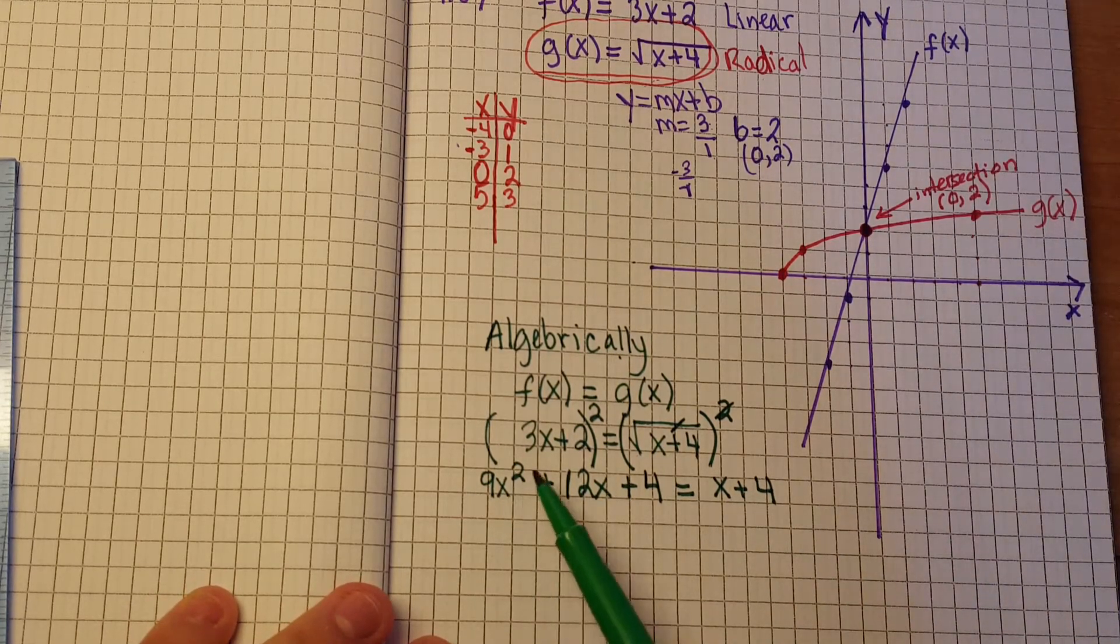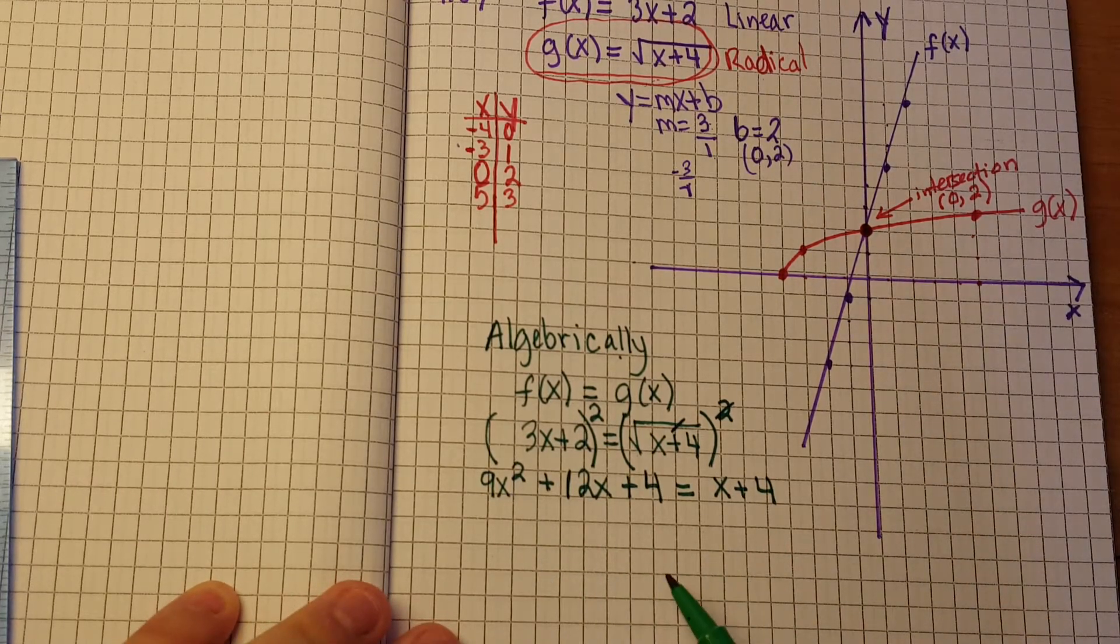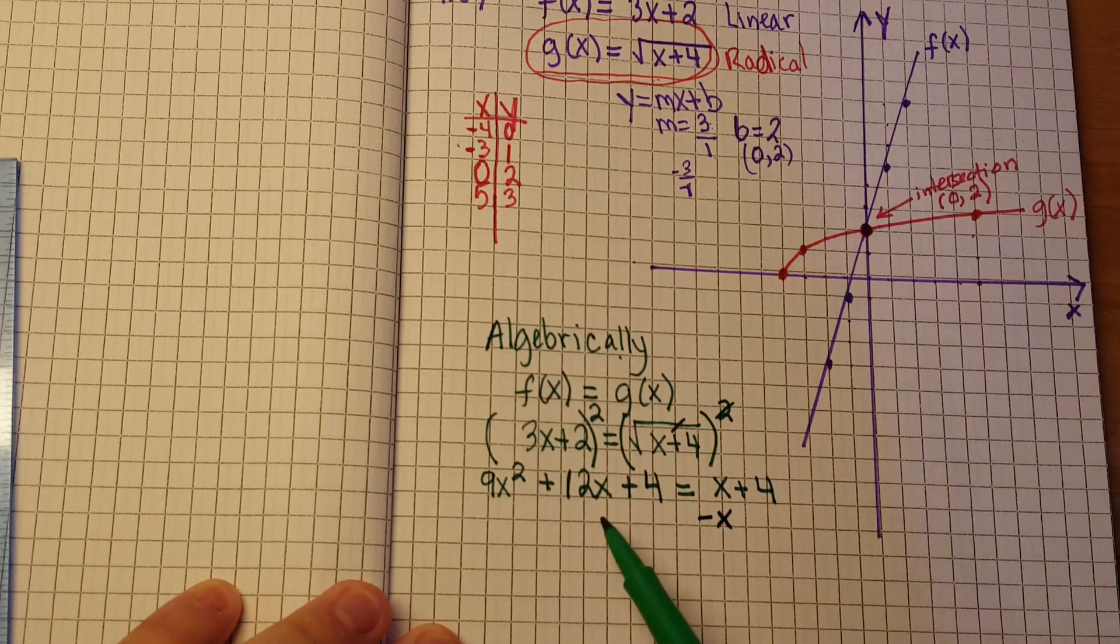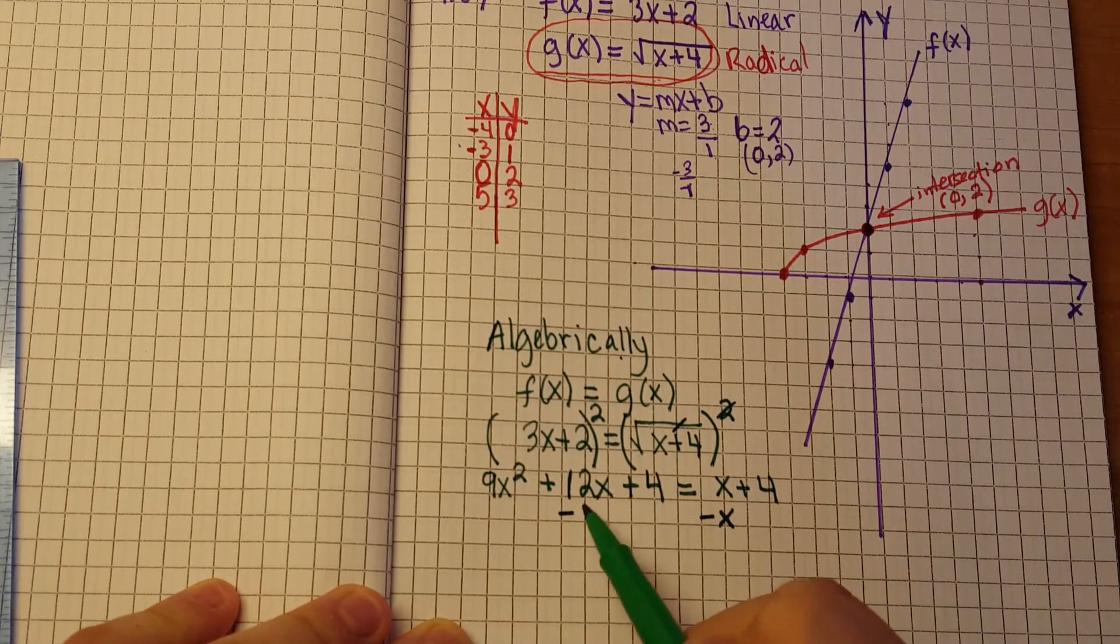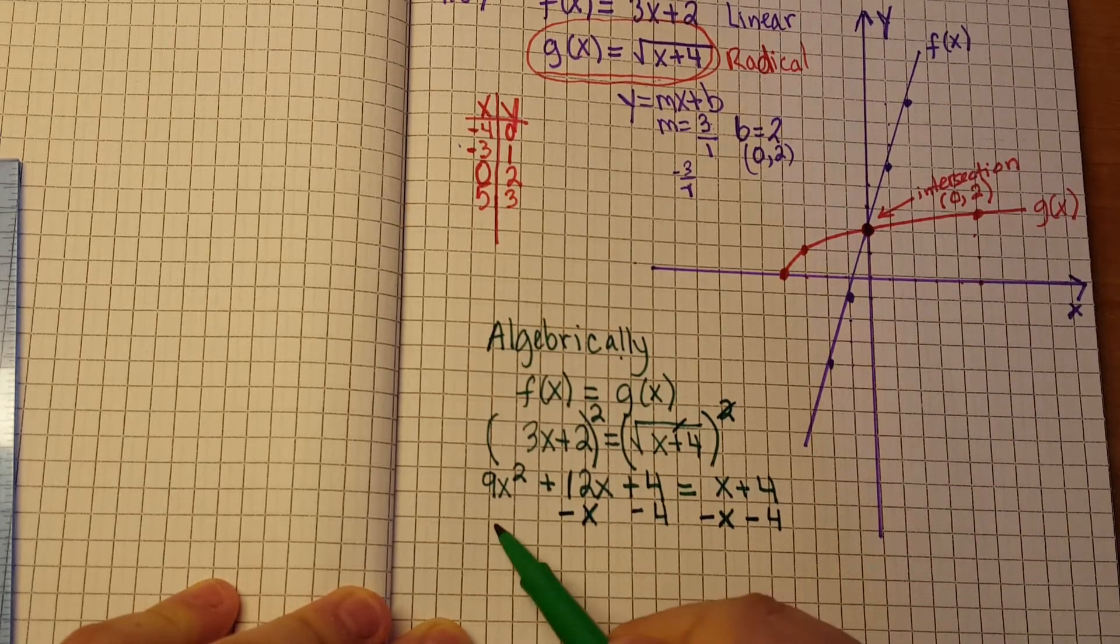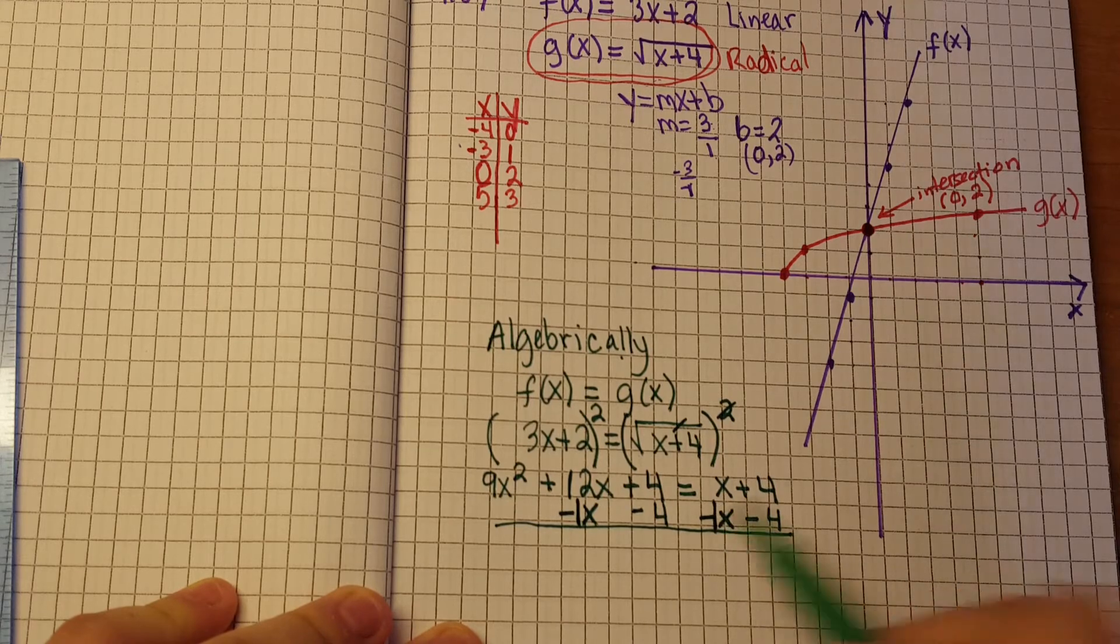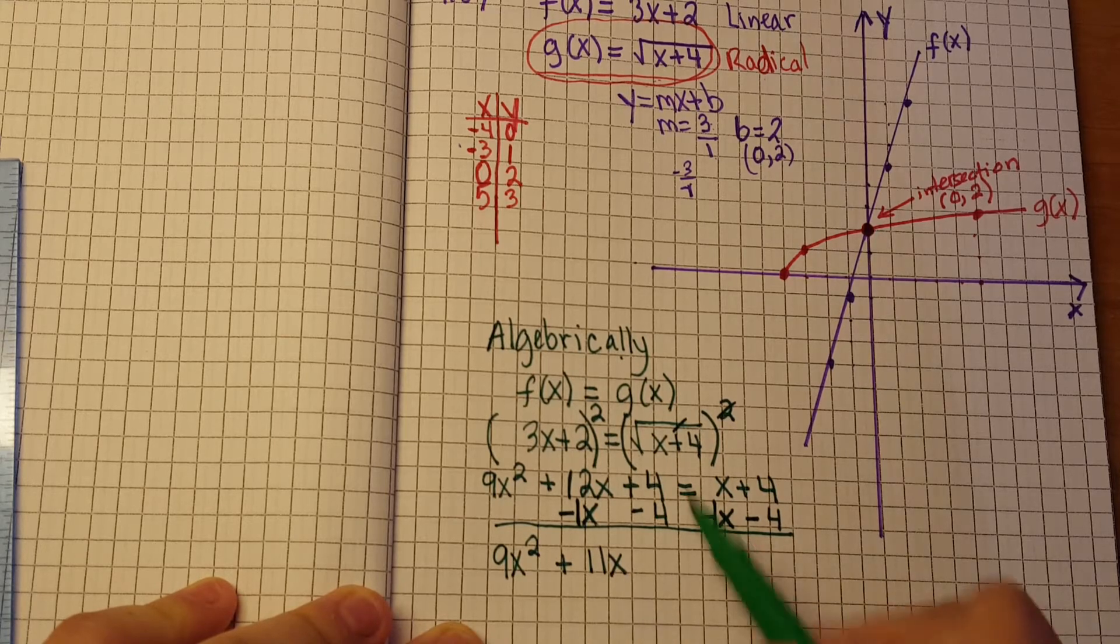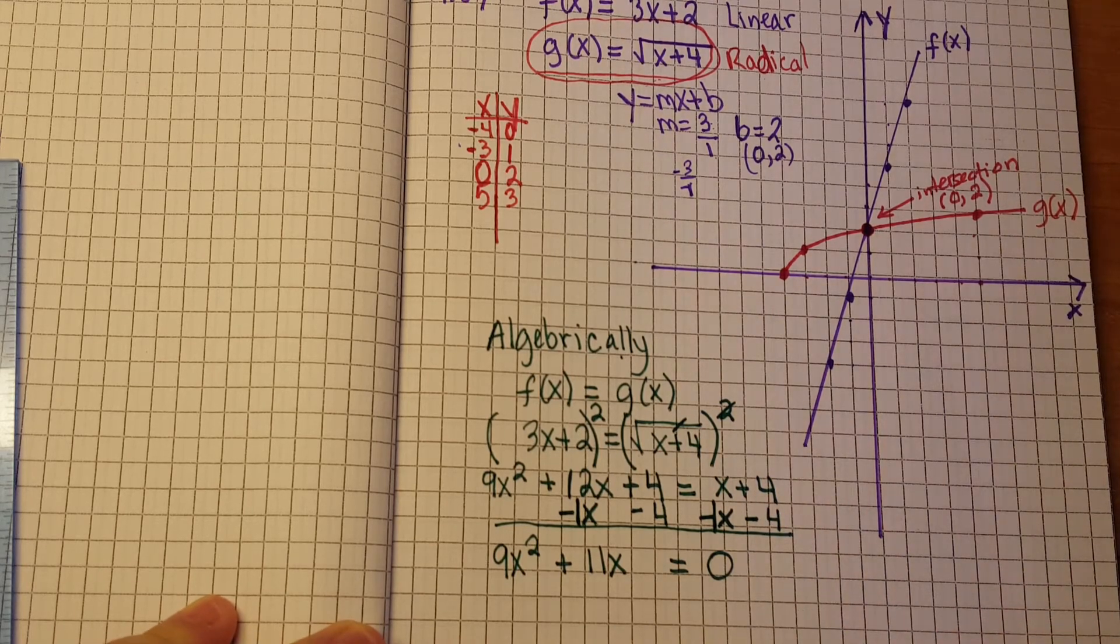We notice that we have an x squared, so we have 9x squared here, so we're probably going to end up with factoring. So let's move, so we're going to subtract x, we want to move everything to the left side. Alright so we're going to subtract it from 12x, and then we're also going to subtract the 4 from 4 over here. Don't forget when you're subtracting an x, that's the same thing as subtracting 1x. So you bring down your 9x squared plus 11x is equal to 0, because 4 minus 4 is 0, and then all of this subtracted each other is also 0.